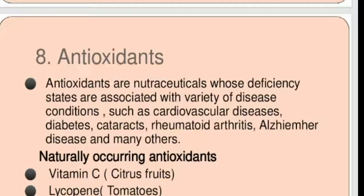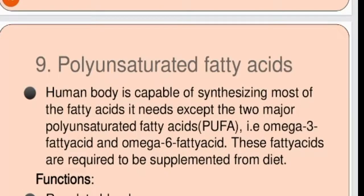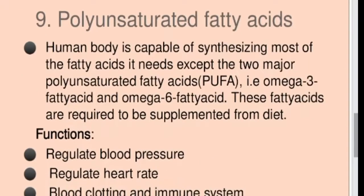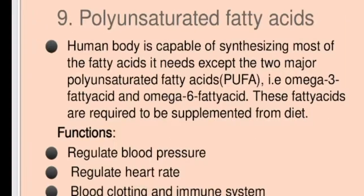Other antioxidants include catechins from green tea, polyphenols, silver rice, and citrus fruits. Polyunsaturated fatty acids function to regulate blood pressure, heart rate, blood clotting, and the immune system; their sources include cold-water fish and dark green leafy vegetables.